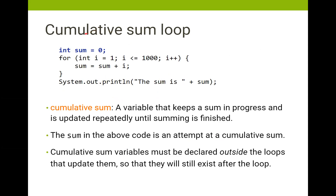The answer is we do something called a cumulative sum loop. We define our cumulative sum variable — we'll call it sum — and we declare it above the for loop. We need to do it above the for loop because we need to worry about scope.